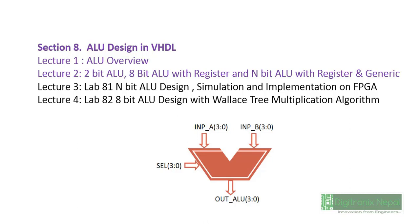Section 8 consists of a four-lecture series. Lecture 1 is an ALU overview — a short overview about the Arithmetic Logic Unit, covering what the ALU does and how operations are performed. The arithmetic and logical unit is a major part of any processor. When designing processors like RISC processors, 32-bit, 16-bit, or 64-bit processors, we should pay careful attention to the arithmetic and logical unit, as the main operations done in a processor occur in the ALU.